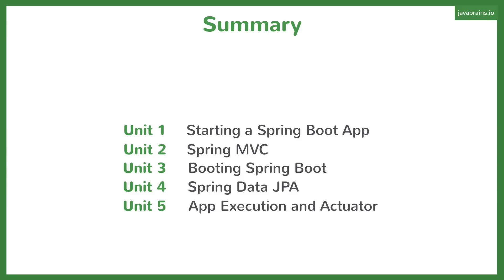We looked at how we could connect to the database using Spring Data JPA, how to map objects and classes to database tables using object relational mapping, including JPA annotations and having it work with the Spring Data JPA framework. In unit five, we saw how to package and execute our Spring Boot application, as well as a tool to create, manage metrics, and observe the state of your application deployed in production — the Spring Actuator, which is a sub-project of Spring Boot.